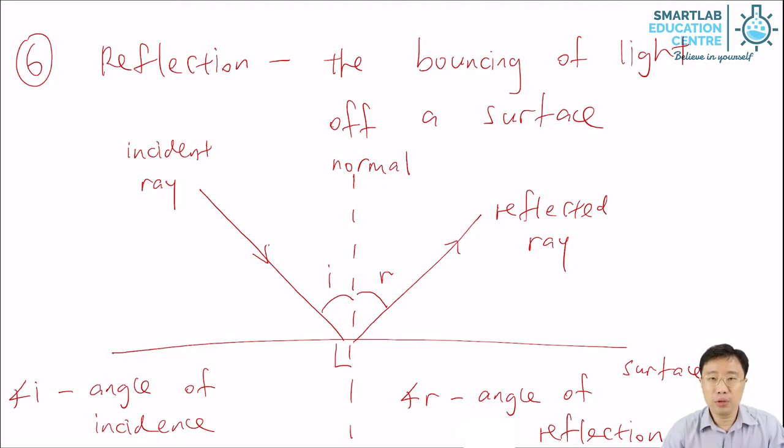You need to know how to label the rays, the angles, and you must remember that the normal is an imaginary line that is perpendicular to the surface. Any angle we talk about in this topic will be between the normal and the incident ray, or the normal and the reflected ray. We do not talk about any angle between the ray and the surface.